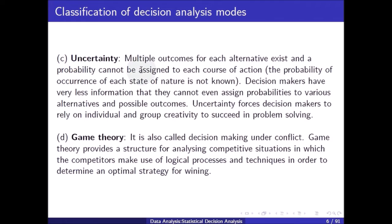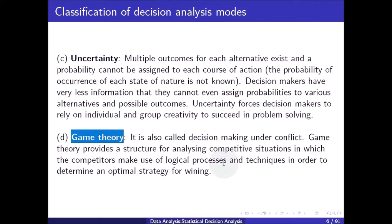Under uncertainty, multiple outcomes exist for each alternative but a probability cannot be assigned to each course of action; the probability of occurrence of each state of nature is not known. Decision makers have very little information and cannot assign probabilities, forcing them to rely on individual and group creativity. Game theory, also called decision making under conflict, provides a structure for analyzing competitive situations where competitors use logical processes to determine an optimal strategy for winning.